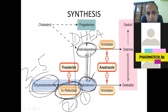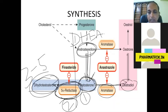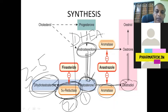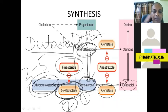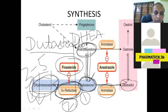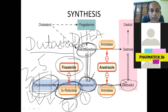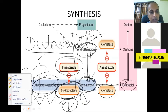Some testosterone gets converted to estradiol, the female sex hormone, via the enzyme aromatase. The drugs finasteride and dutasteride are 5-alpha reductase inhibitors given to reduce DHT levels, particularly in benign prostatic hypertrophy, prostate cancer, and testicular cancers.